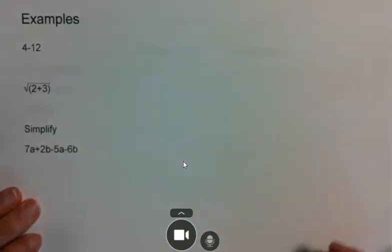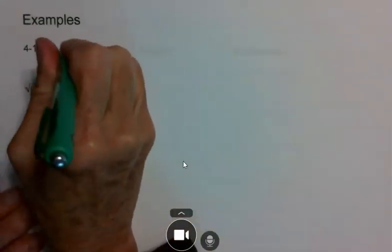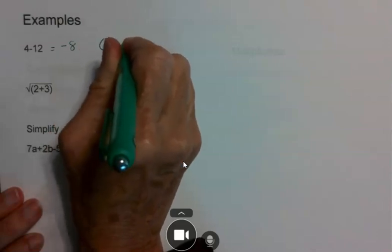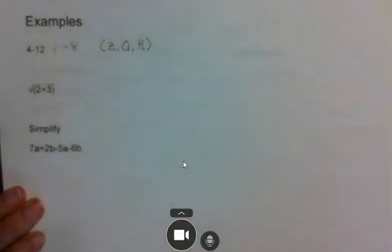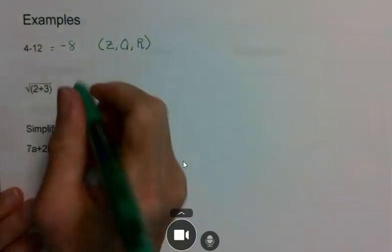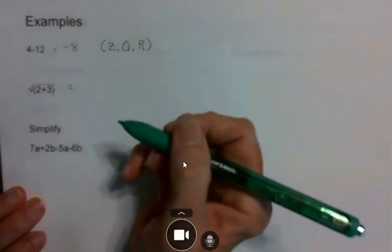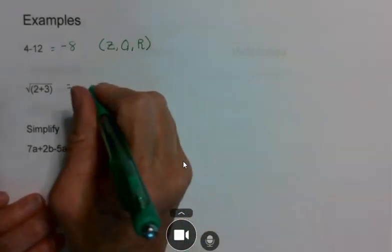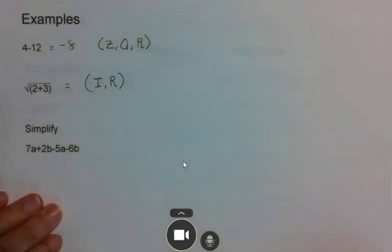You've got to be able to get a value and then classify it. So 4 minus 12 is negative 8. When I classify that, it would be an integer, a rational number, and a real number. Down here, we have the square root of 2 plus 3. If you do it on your calculator, it goes on forever and ever — it's not going to end. So you would round it off, and you know it's going to be an irrational real number.